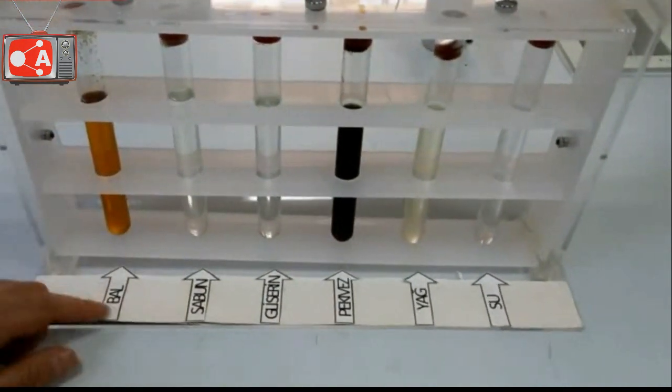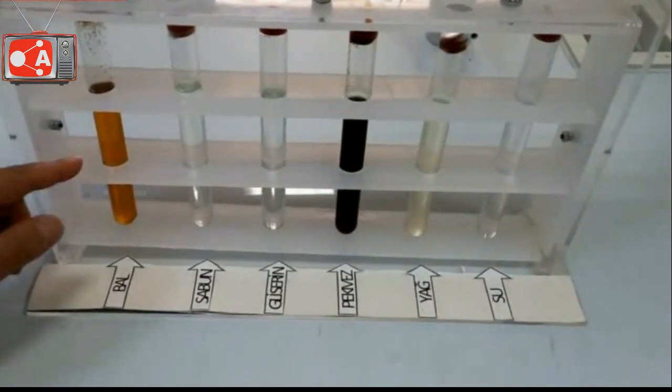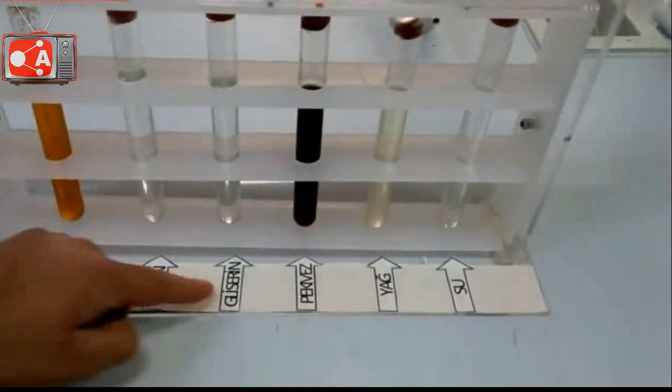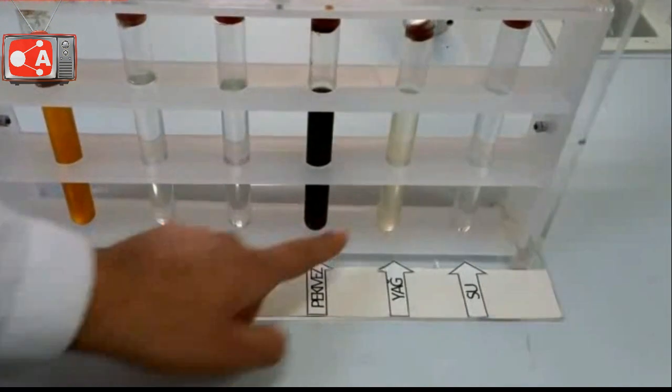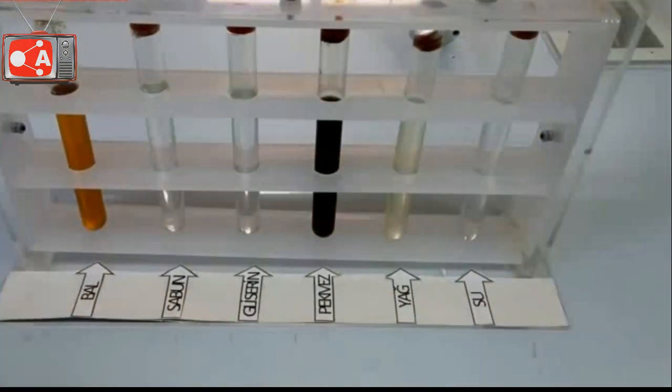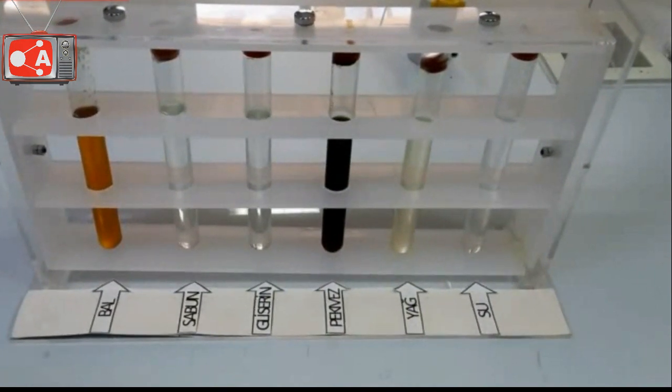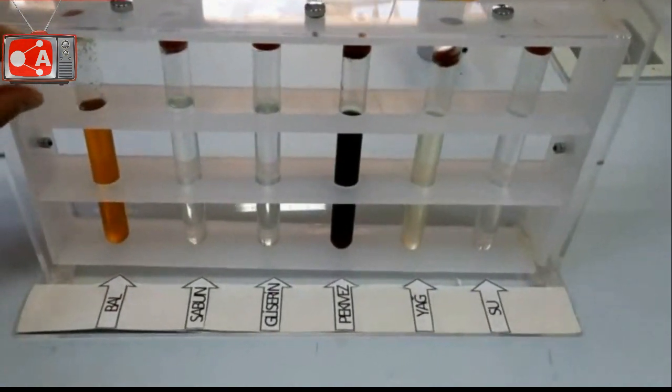We will compare the viscosity of different substances in liquid form in this experiment. We get 6 test tubes and we add different substances such as honey, liquid soap, glycerin, peck mass, water and oil.